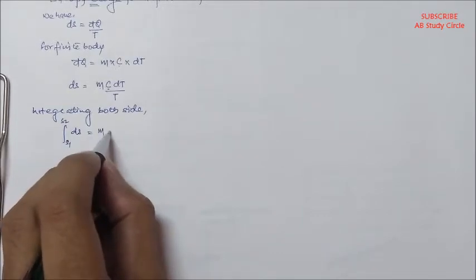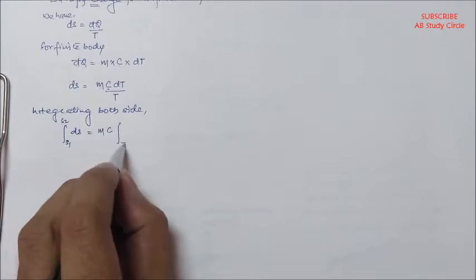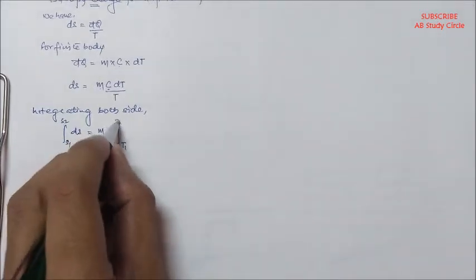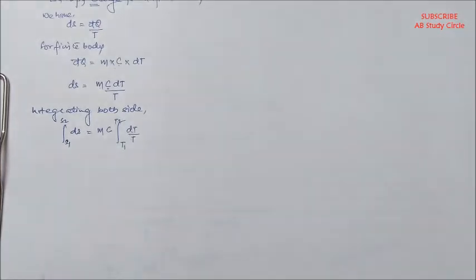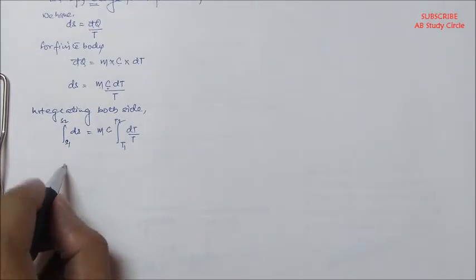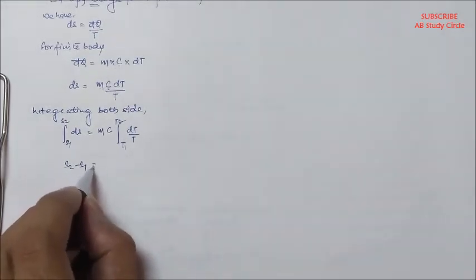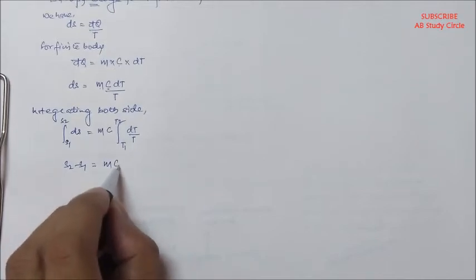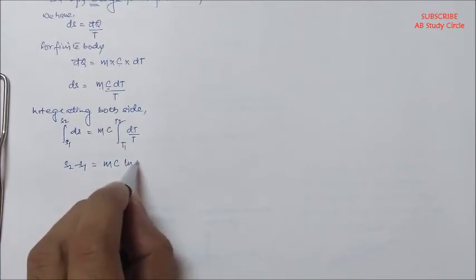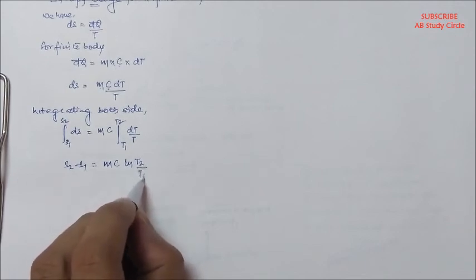So it will be taken out of the integration and we left with your temperature. So temperature limits will be from t1 to t2 dt by t. Okay, so we have on the left hand side, s2 minus s1 is equal to m c ln t2 by t1.